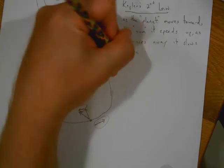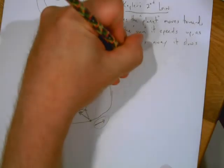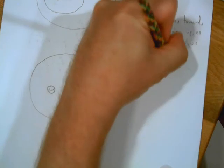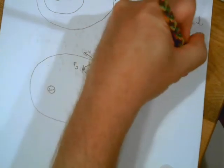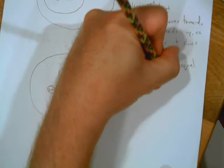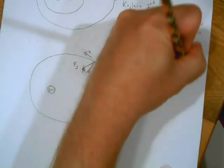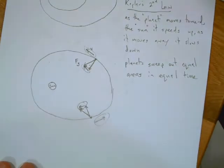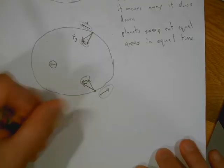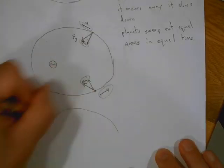Now Kepler didn't word it like this. This is what Kepler said: Planets sweep out equal areas in equal time. So let's talk about what he's actually saying or what he actually observed with this.